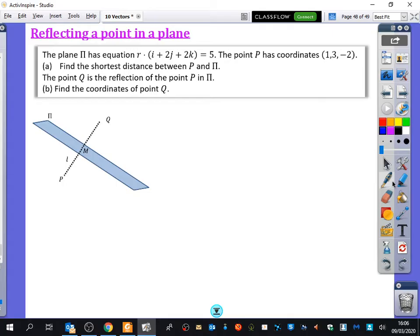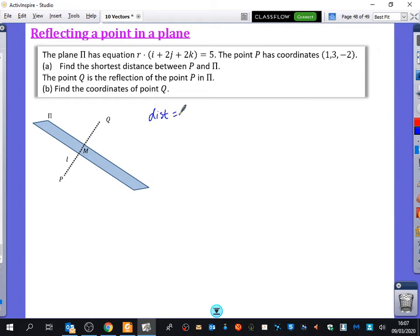So we've got a plane with this particular equation that we've got here. We've got a point with this particular coordinate that we've got here. And the first thing we're going to do is find the shortest distance between the point and the plane. Well, we know how to find the shortest distance between the point and the plane. We know that the shortest distance is going to be... Well, this is my N1, N2, N3. This is my minus D, because it's on the wrong side of the equation. And this is my alpha, beta, and gamma that I've got there.